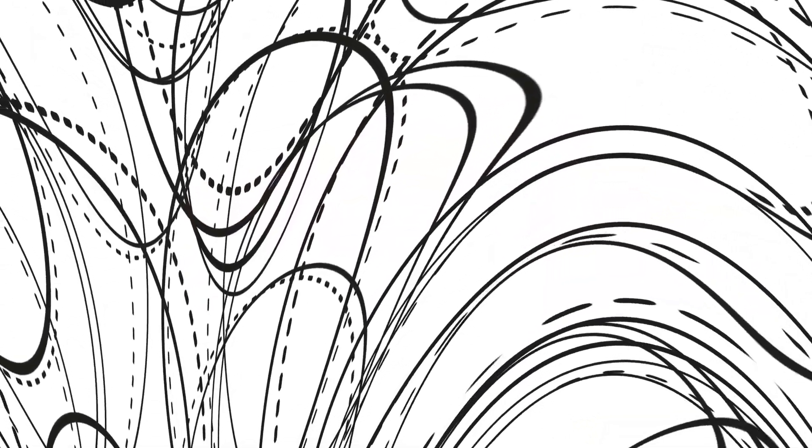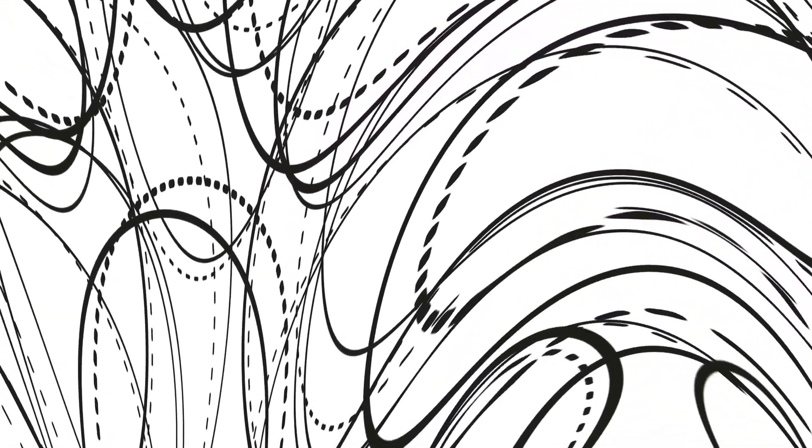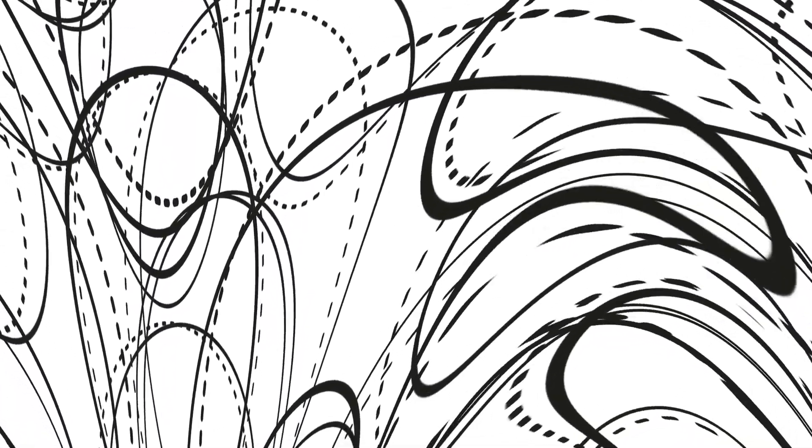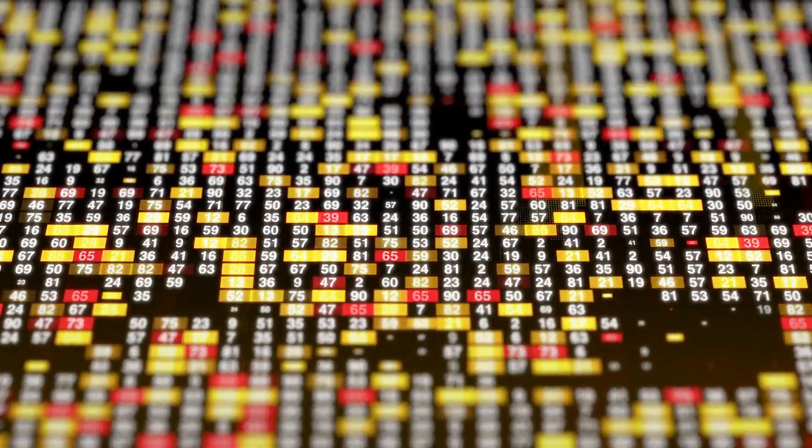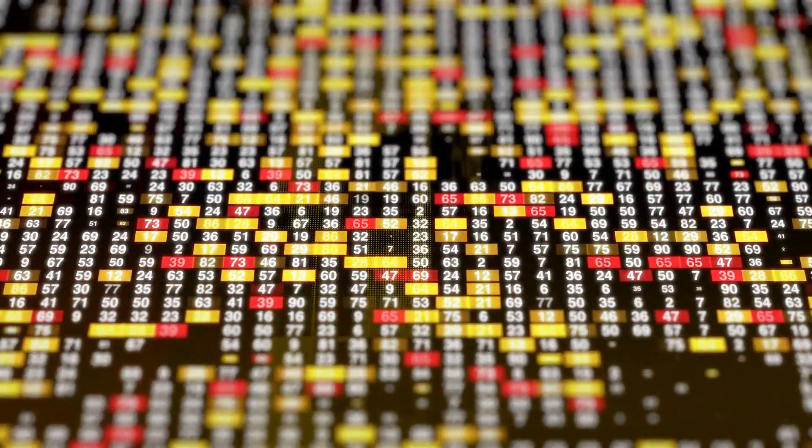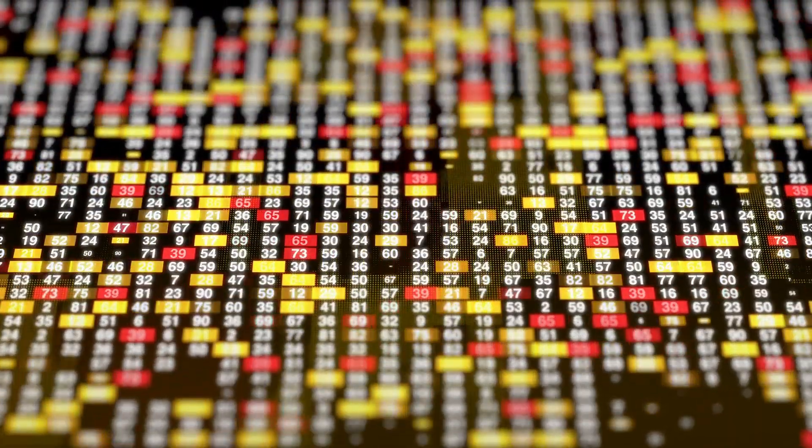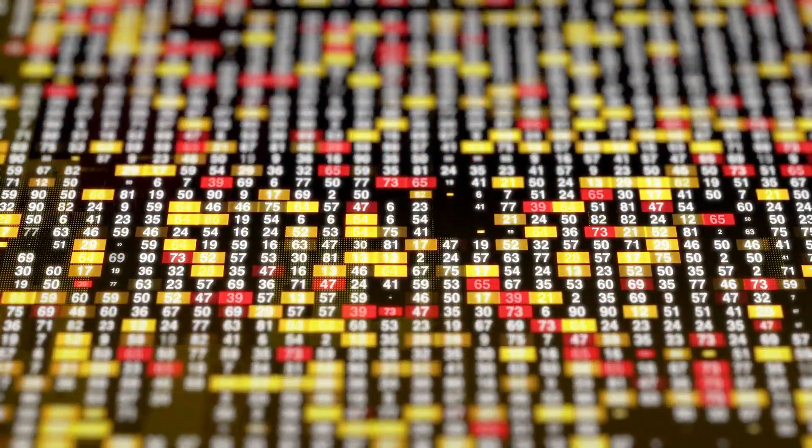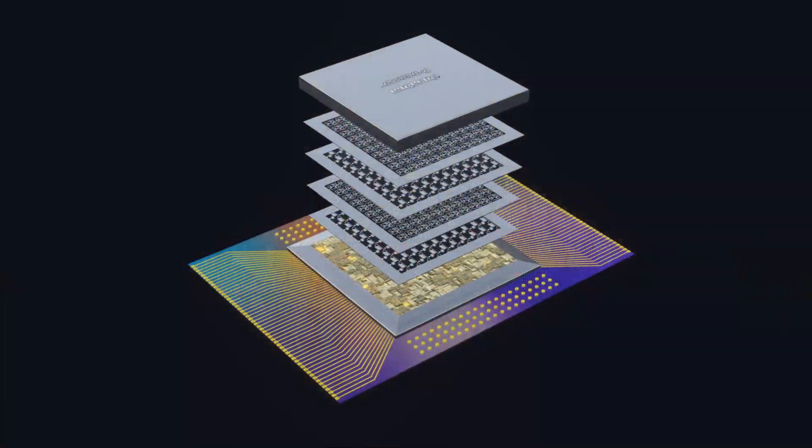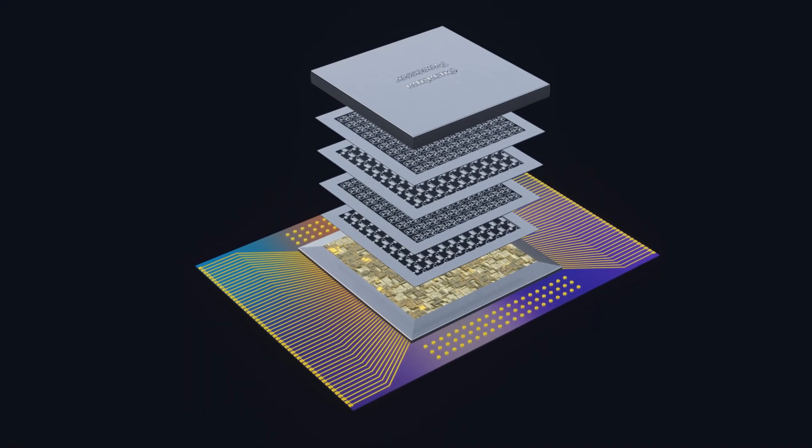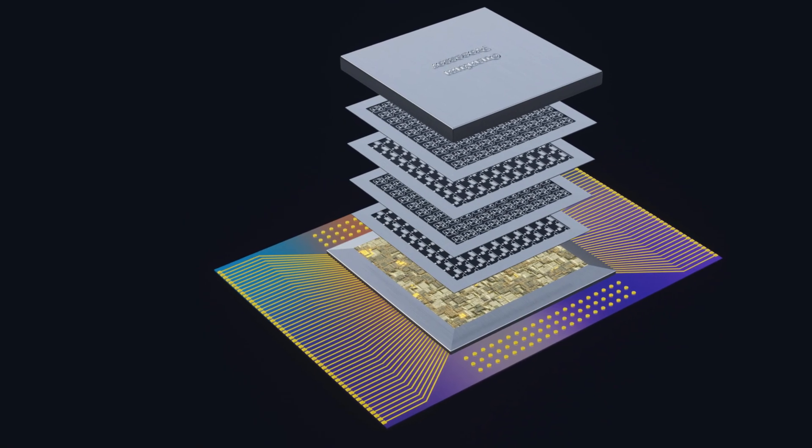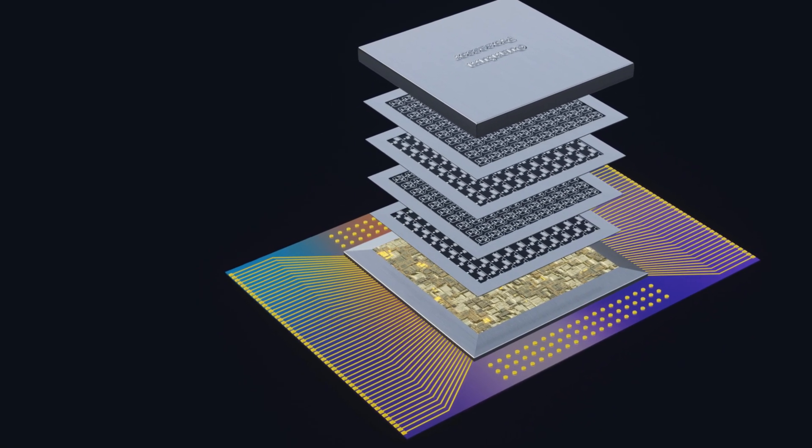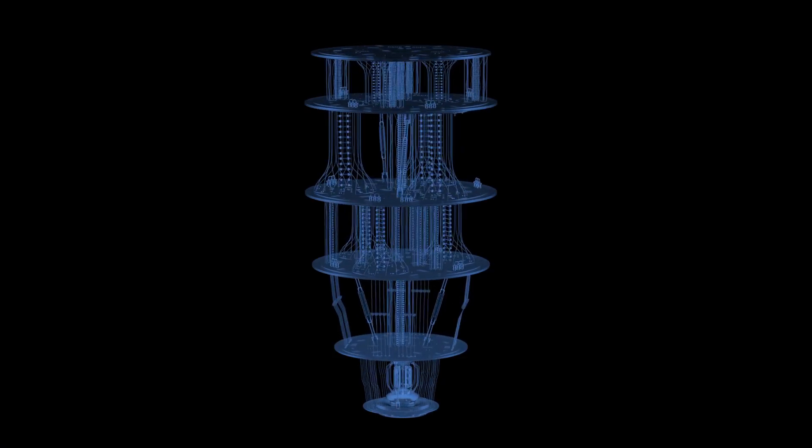People are already building things like quantum support vector machines and quantum neural networks. Support vector machines, in the classical world, are all about finding the best separating boundary in some high-dimensional feature space. When you bring quantum into the picture, you can map your data into even higher-dimensional quantum feature spaces using what are called quantum kernels. The idea is that a quantum computer can evaluate the similarity between data points in spaces so large that a classical computer would choke on them, and it can sometimes do it with fewer steps.